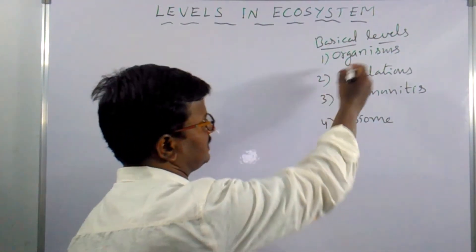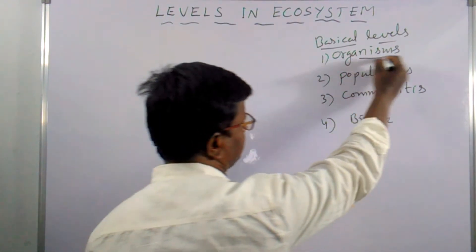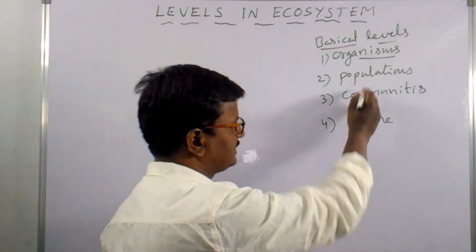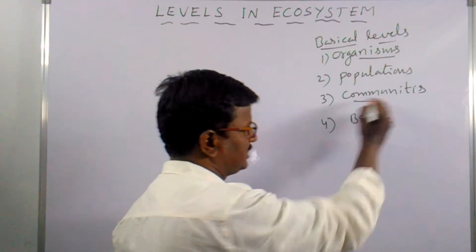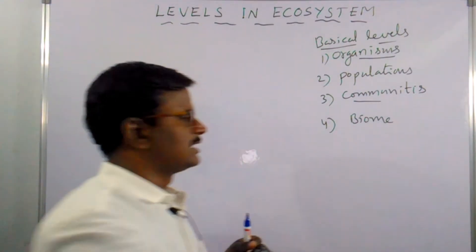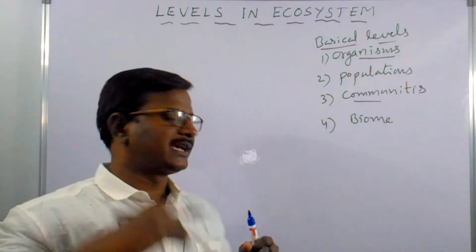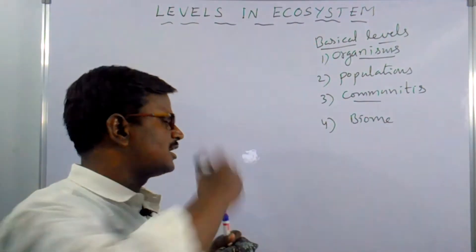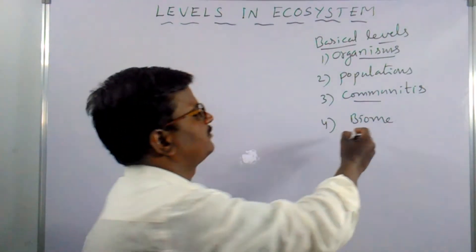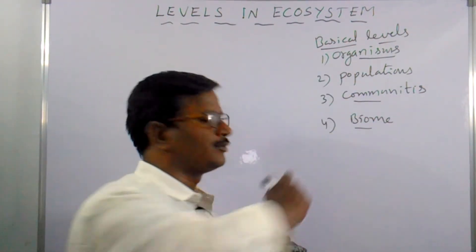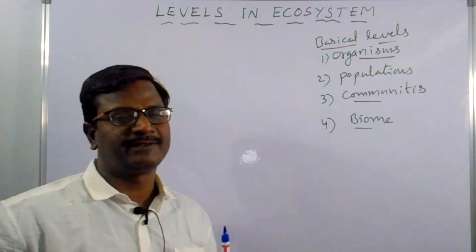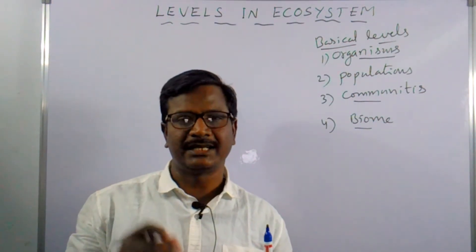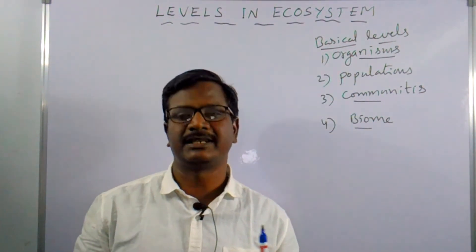An organism is an individual. It makes populations. Populations make communities. Communities finally form the large area of biome. These are the four basic levels present in the ecological organization.